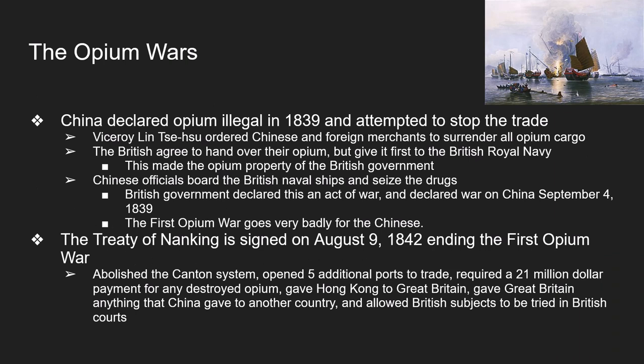This leads to the Opium Wars. China declares opium illegal in 1839, and a man named Lin Zexu represents the Chinese government, ordering all Chinese and foreign merchants to surrender opium cargo to the government. The British agree but instead give the opium to the British Navy, making it property of the British government. Chinese officials board the British naval ships, seize the drugs, and the British government claims this was an act of war, declaring war on China in September 1839.